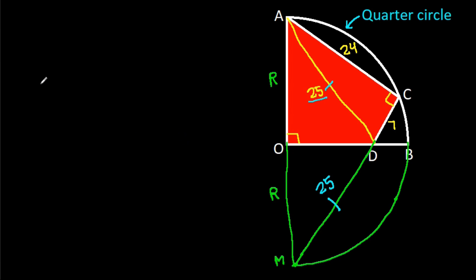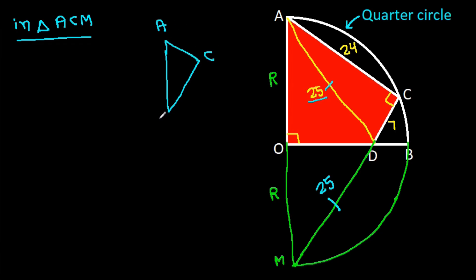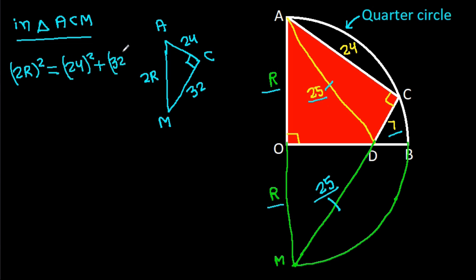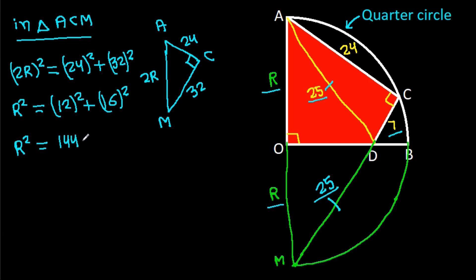In triangle ACM, AC = 24, CM = CD + DM = 7 + 25 = 32, and angle ACM = 90 degrees. So AM² = 24² + 32², and AM = 2R. Therefore R² = 12² + 16² = 144 + 256 = 400, so R = 20.